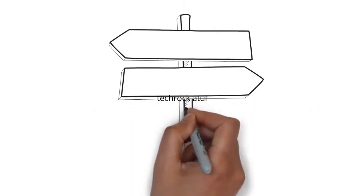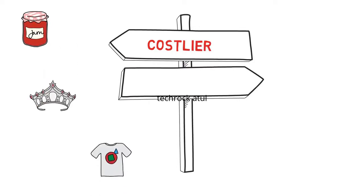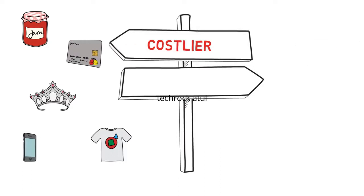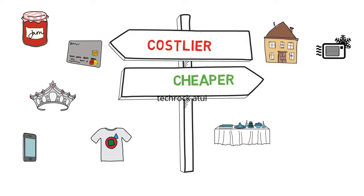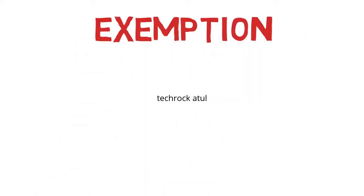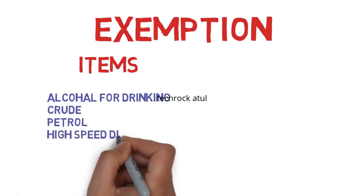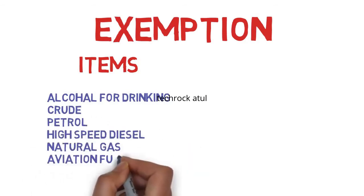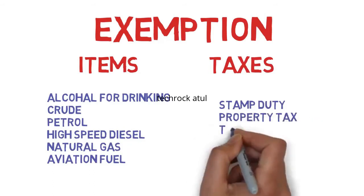After applying GST, some items will cost more: packaged food, jewelry, ready-made garments, mobile services, credit card services, etc. Some items will cost less: home restaurant meals, ACs, washing machines, microwave ovens, small cars, and industries will face lower taxes. Some items are exempted from GST: alcohol for human consumption, petroleum products like crude petrol, high-speed diesel, natural gas, and aviation turbine fuel. Some taxes are also exempted: stamp duty, property tax, toll tax, and electricity duty.